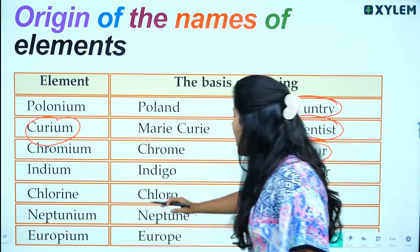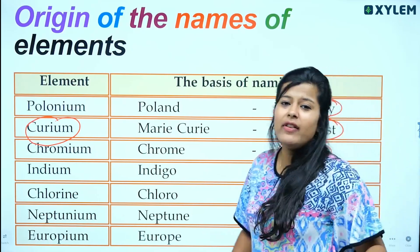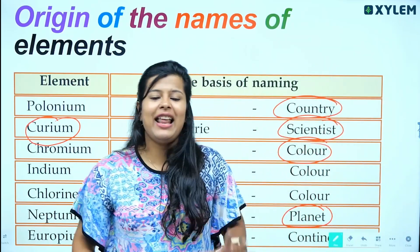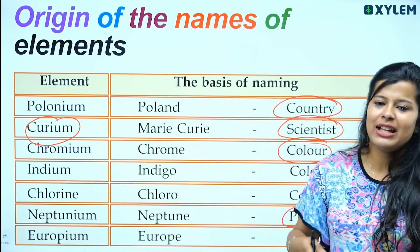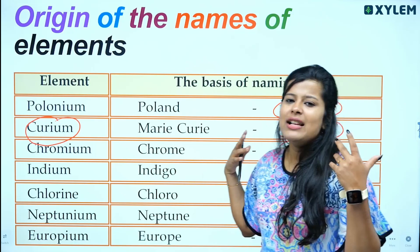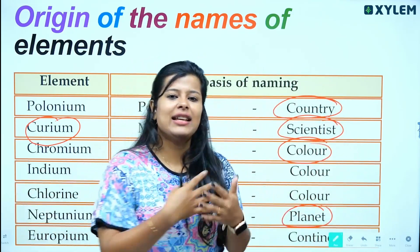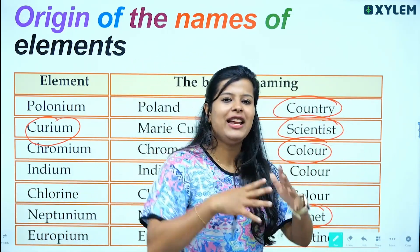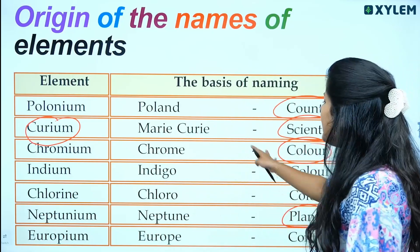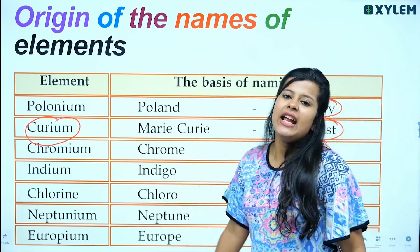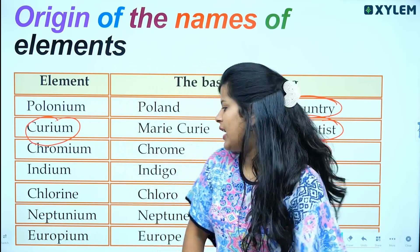Neptune is named after the planet Neptune. We know that a few elements are named after planets. Neptune represents the planet Neptune.